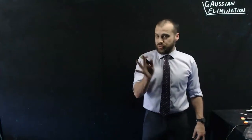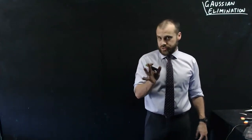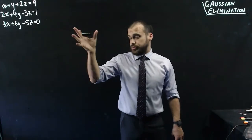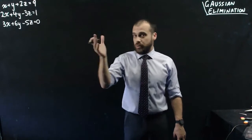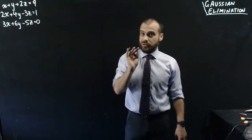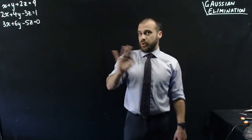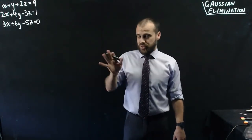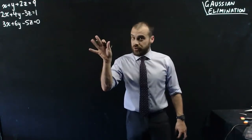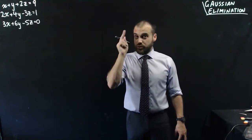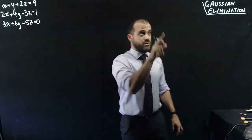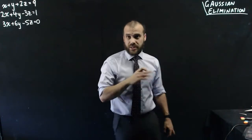So you've got yourself a system of linear equations and you want to find a solution to them. That solution might be a point x, y, z, it might be a line, it might also be something a little bit different - there might be no solution. Now in any case, you want to figure it out, but you don't want to think. That's when you use Gaussian elimination.